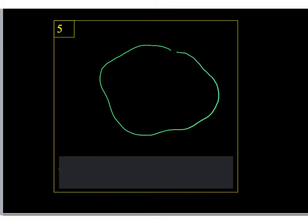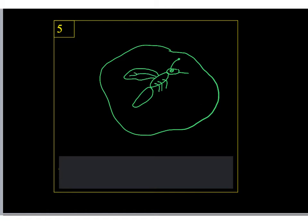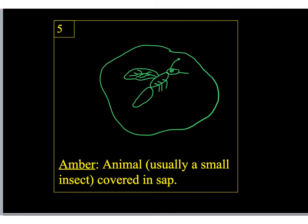Now we've got amber. We start with a kind of irregular shape, and inside of it we draw an insect — all insects have three body segments with legs attached to the middle segment. What we've drawn is a mosquito trapped in amber. With amber, usually a small insect or very small animal gets covered in sap, gets stuck and buried in the sap, and then the sap turns to amber. Probably the most famous fossil type from its use in Jurassic Park.